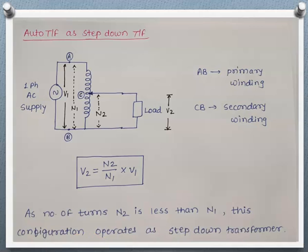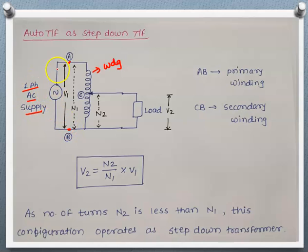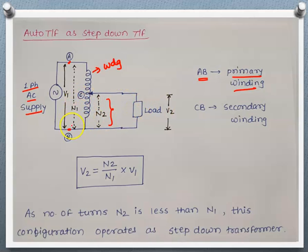Let's see how this transformer can be used as a step-down transformer. Suppose this is the winding with terminals A, B, and C (middle point). When A and B are connected to single-phase AC supply, the turns between A and B act as the primary winding. Point C and B — where B is common for both primary and secondary — forms the secondary, and the CB turns are connected to the load. So CB acts as the secondary winding.